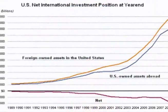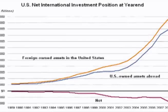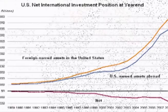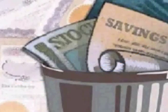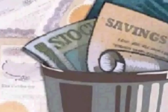Direct investment, also called physical flows, refers to actual foreign direct investments such as investments in real estate, manufacturing, and local acquisitions. Foreign direct investment occurs when an investor acquires ownership and control over these assets. Portfolio investment refers to money flowing into and out of the country for the purchase of financial assets such as stocks and bonds.